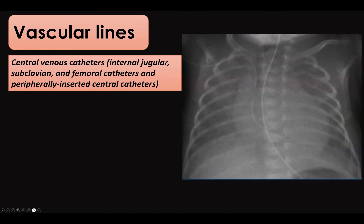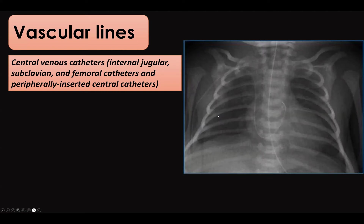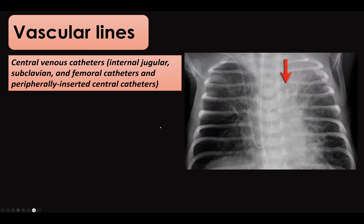An example of an abnormally positioned peripherally inserted line shows it traveling from axillary vein to subclavian, then right brachiocephalic, then superior vena cava into the right atrium — possibly reaching the right ventricle. Another example shows the line reaching the right atrium and crossing to the other side, either through a patent foramen ovale to the left atrium or through the coronary sinus — both are abnormal and require readjustment. Another case shows crossing through the foramen ovale to the left atrium, then to the left upper pulmonary vein.